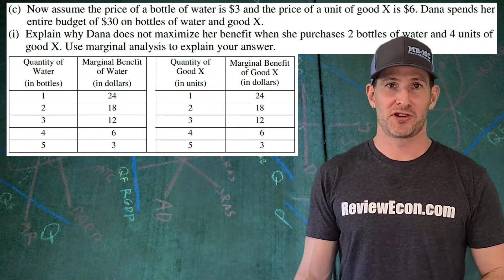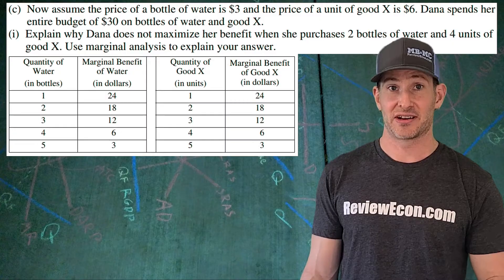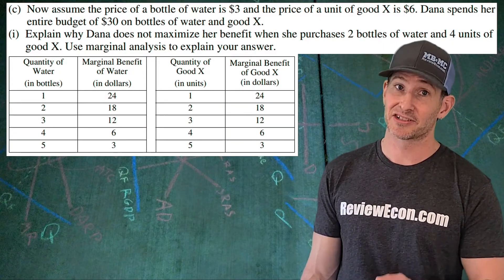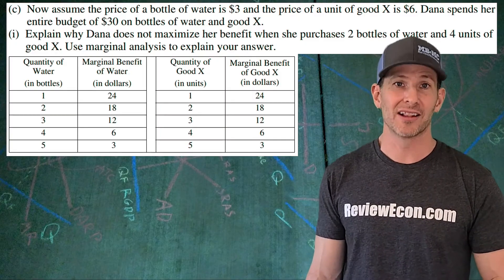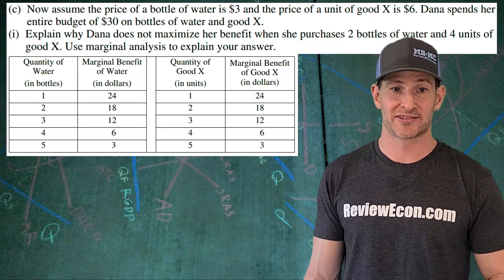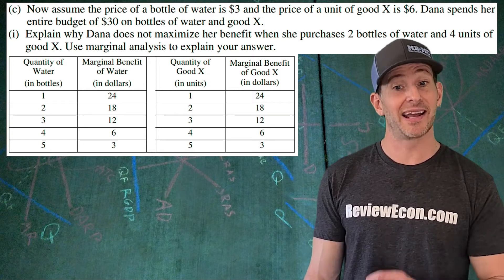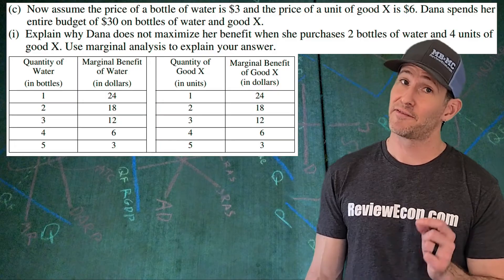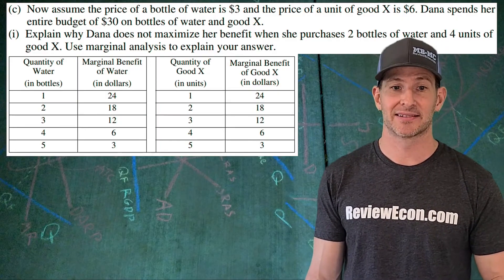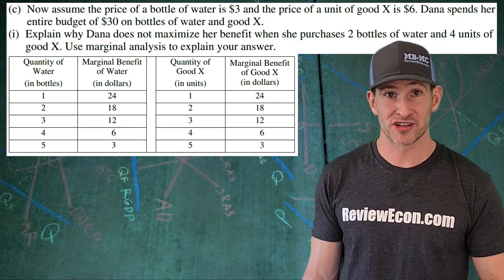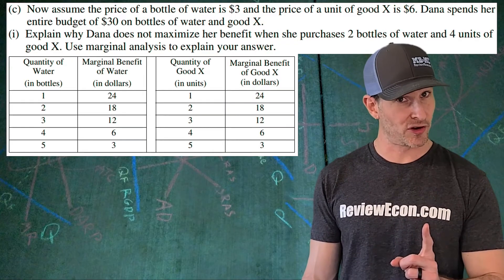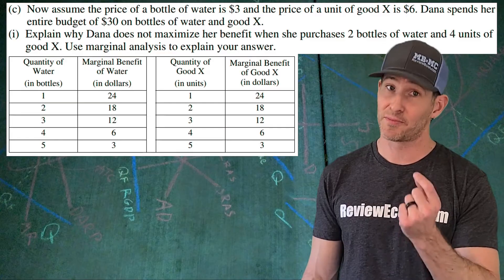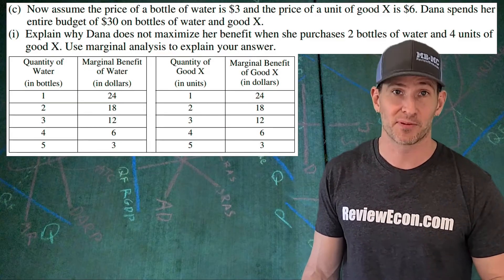For part C, we have a few new assumptions: the price of a bottle of water is $3, the price of good X is $6, and Dana has $30 to spend. For the first part of C, we must explain why Dana is not maximizing her benefit if she purchases two bottles of water and four units of good X, using marginal analysis. That means we're not looking at total benefits versus total costs — we're looking at the marginal utility or marginal benefit and the price of the product.